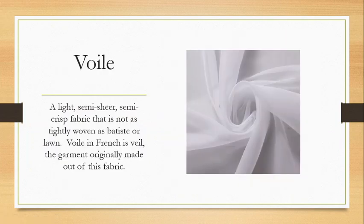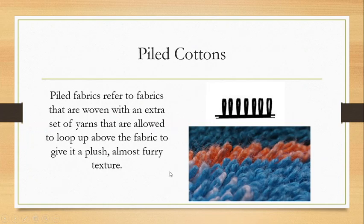Next we have voile. Again, voile is in that partnering group with lawn and batiste — very similar fabrics. It's a light, semi-sheer, semi-crisp fabric, not quite as tightly woven as batiste or lawn, so it's a little more see-through than either of those two. Voile means 'veil' in French, which was the garment it was originally used to make. That concludes our sheer fabrics for cotton.